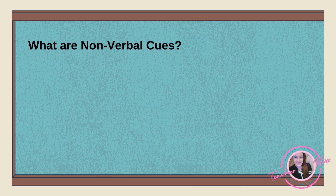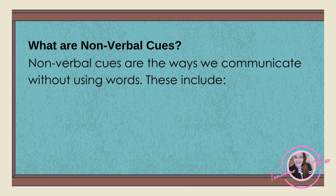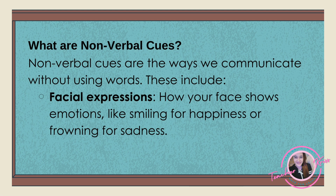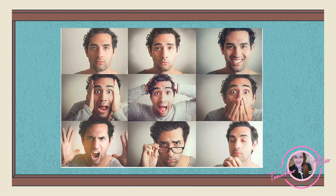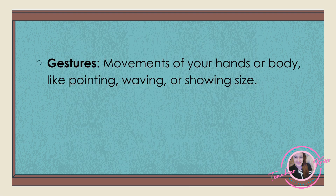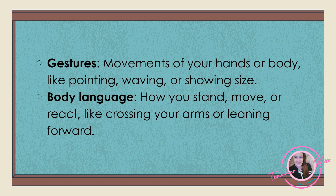So, what are non-verbal cues? Non-verbal cues are the ways we communicate without using words. These include facial expressions — how your face shows emotions like smiling for happiness or frowning for sadness, like this. Gestures — movements of your hands or body like pointing, waving, or showing sides. Body language — how you stand, move, or react, like crossing your arms or leaning forward.